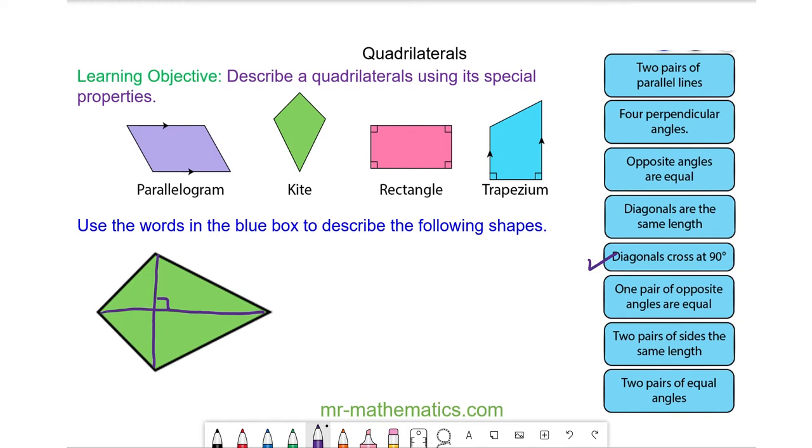Also the opposite sides are the same length. So this side is the same as this side and this side is the same as this side. So two pairs of sides are the same length, and it also has one pair of equal and opposite angles here and here. So these are the unique properties of a kite.